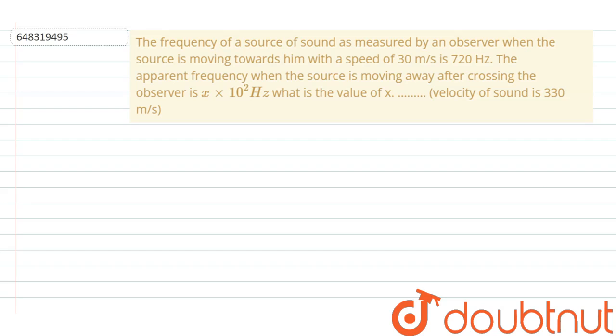Hello everyone. In the question it is given that the frequency of a source of sound is measured by an observer when the source is moving towards him with a speed of 30 meters per second is 720 hertz. The apparent frequency when the source is moving away after crossing the observer is x into 10 power 2 hertz. What is the value of x? Velocity of sound is 330 meters per second. So here we need to find out the value of x.